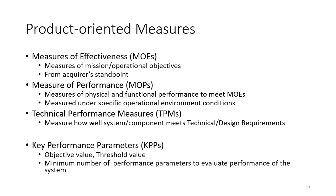The third tier is technical performance measures (TPMs), typically done at the component or subsystem level, showing how the system meets the technical design requirements. So the three levels are: the operational MOEs — mission and operational objectives; the MOPs — functional and physical performance measures; and the design-level TPMs.